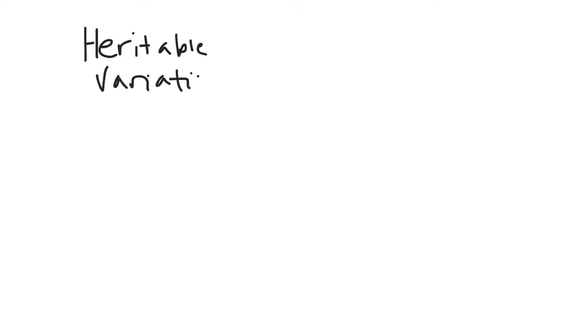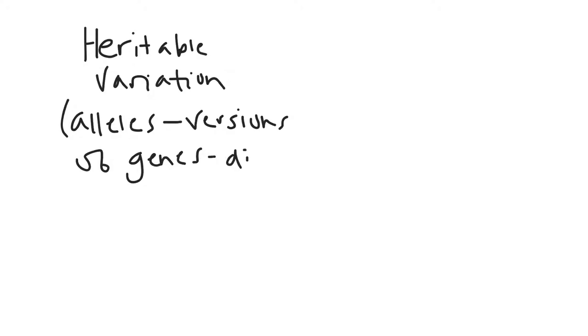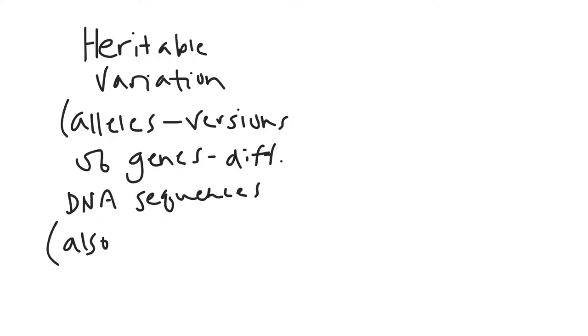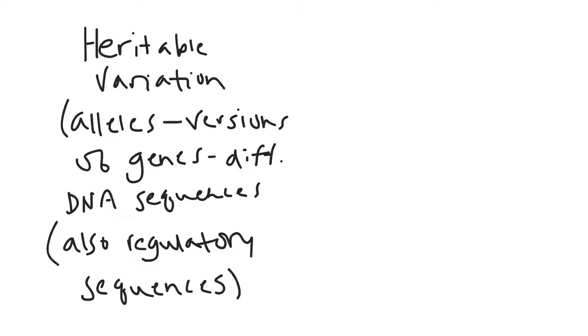What you have to have is some heritable variation in the population. By that we mean different alleles, which are just versions of genes, meaning that they have different DNA sequences. There are also situations where it's not actually the gene that has a difference but a regulatory sequence, but in any case it is still differences in DNA sequences.